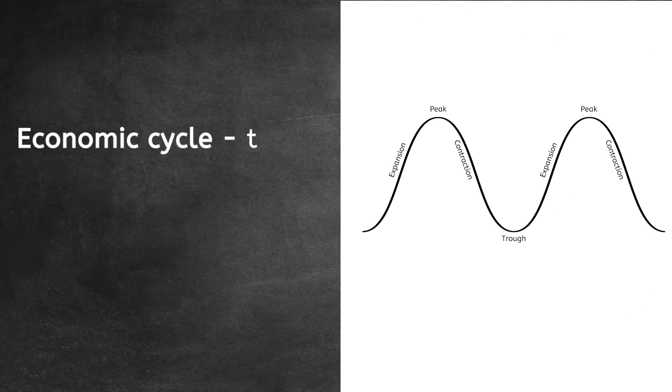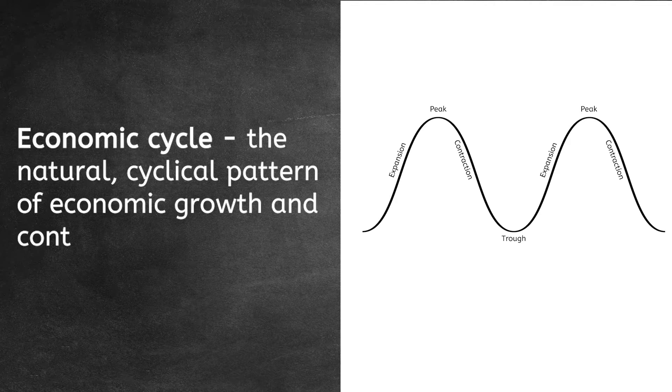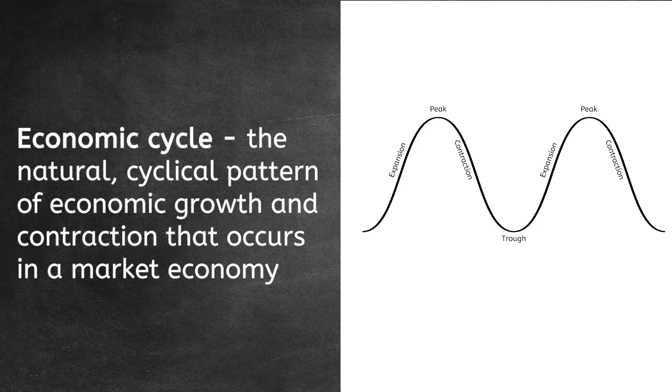In a perfect world, an economy would always be growing and getting better. Unfortunately, that isn't the case. Economies are cyclical. An economic cycle is the natural cyclical pattern of economic growth and contraction that occurs in a market economy. In other words, there are good times and then there are bad times. For example, the glitz and glamour of the roaring 20s was followed by the hard times of the Great Depression.